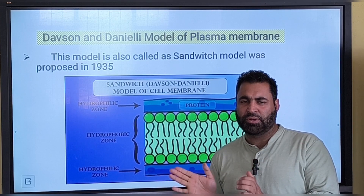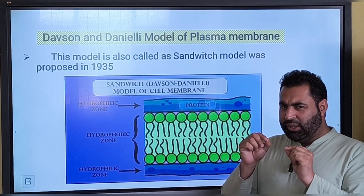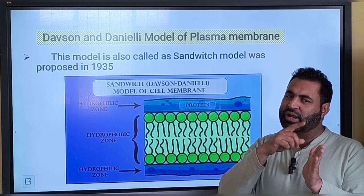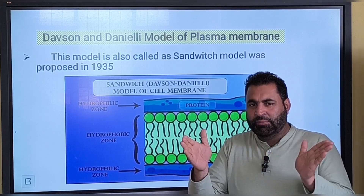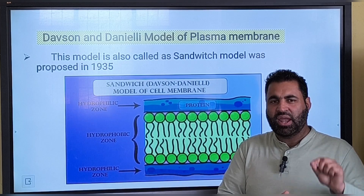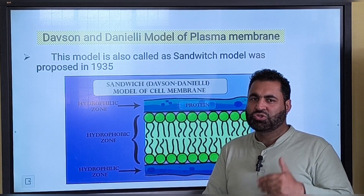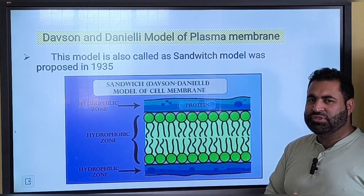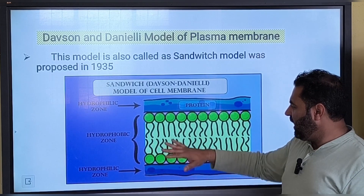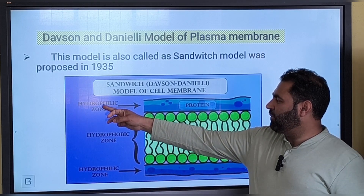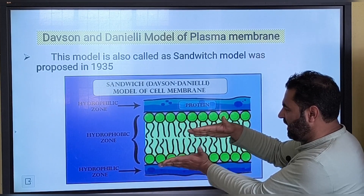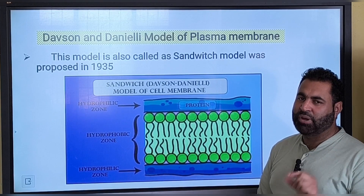This is Danielli and Davson's model of plasma membrane, also called the sandwich model. The evidences were: first, starfish eggs required less force to compress than a pure lipid structure; second, adding proteins to a lipid film reduced its surface tension to the range of a plasma membrane. Based on these evidences, Danielli and Davson proposed an outer protein layer, an inner protein layer, and in between a central hydrophobic zone made up of phospholipids.